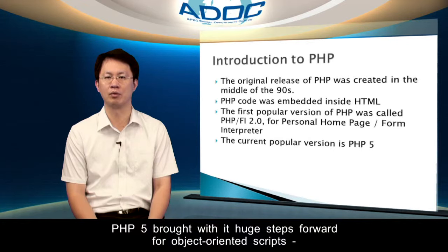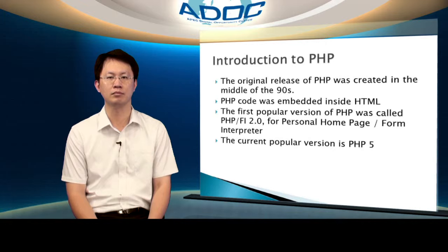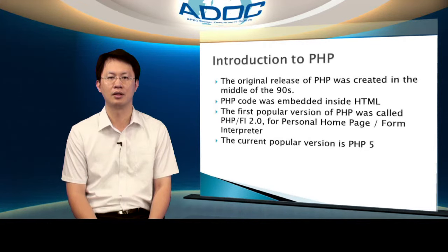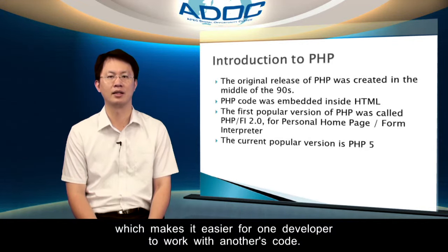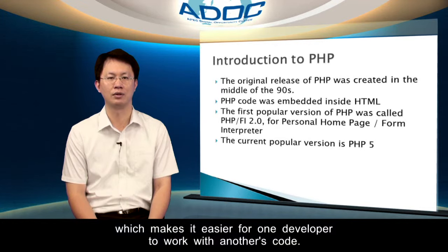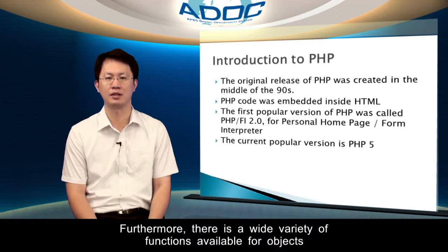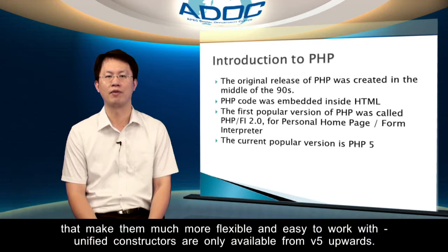PHP-5 brought with it huge steps forward for object-oriented scripts. Developers are now able to declare how their objects may be used, which makes it easier for one developer to work with another's code. Furthermore, there is a wide variety of functions available for objects that make them much more flexible and easy to work with.